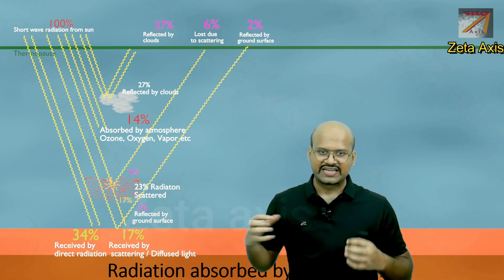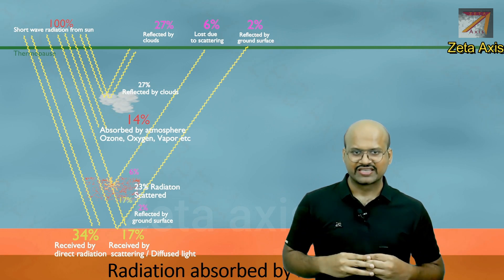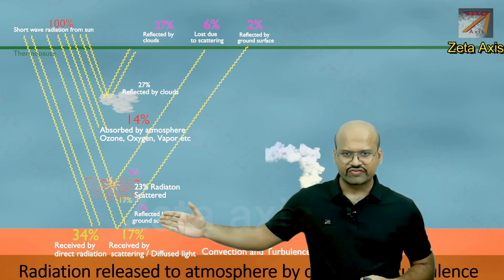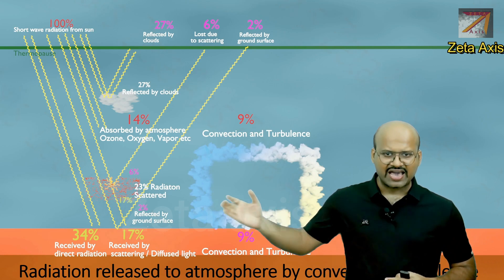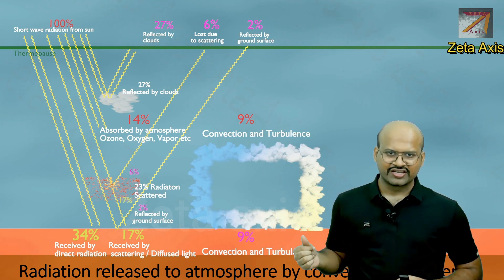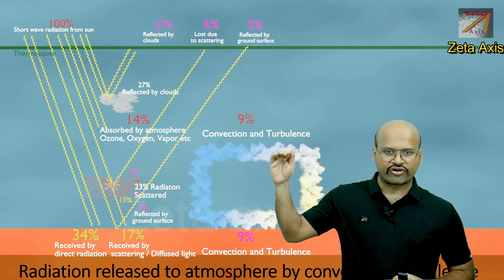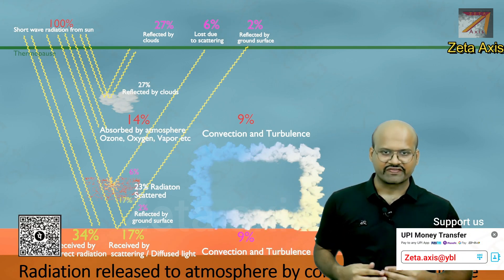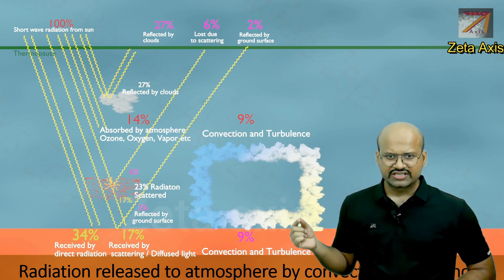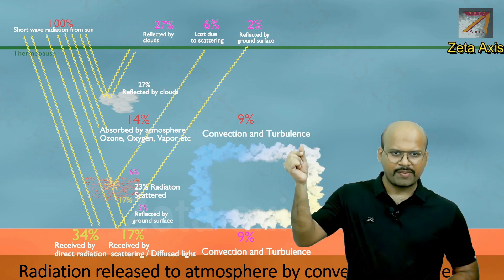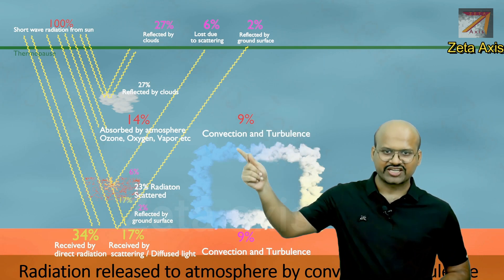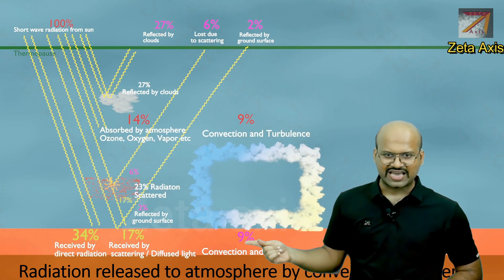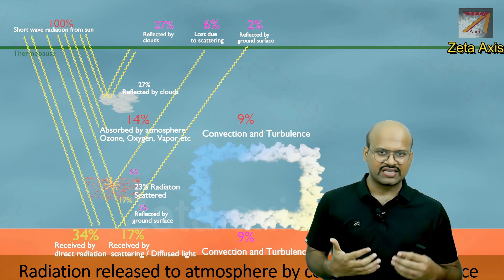The radiation directly absorbed by Earth increases its temperature — the earth gets heated up. The air close to the surface also heats up, rises, cools down, and flows back, creating convection and turbulence. This air moving from the ground to the upper atmosphere transfers heat to the atmosphere. This process accounts for 9% lost by Earth and 9% gained by the atmosphere.